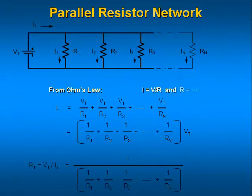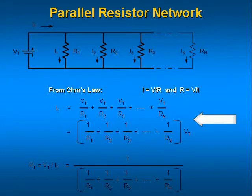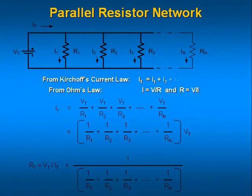In a parallel circuit, all the resistors are connected across the voltage source V_total. Each resistor makes up a branch with its own branch current equal to V_t divided by the resistance in that branch. So I1 equals V_t divided by R1, I2 equals V_t divided by R2, and so on out to branch n. The sum of the branch currents equals the total current in the circuit. This is Kirchhoff's current law, where all current entering a junction also exits that junction.